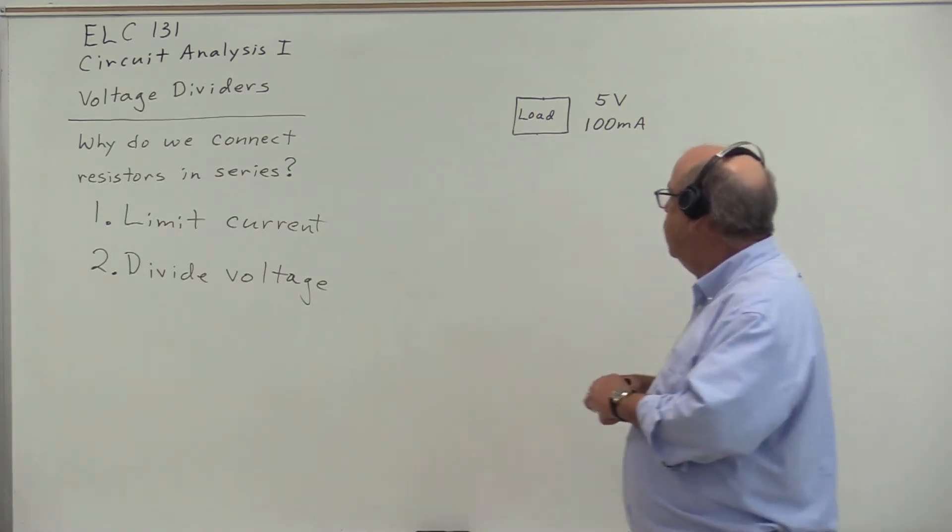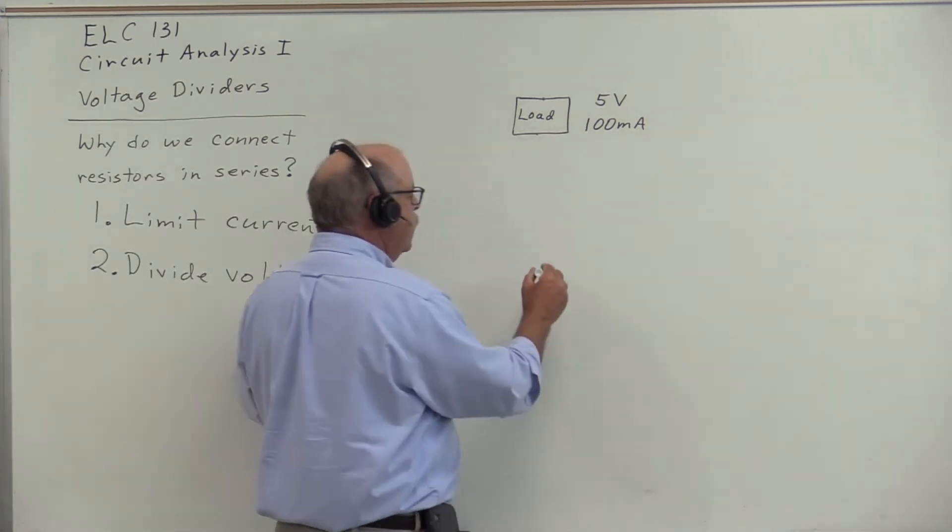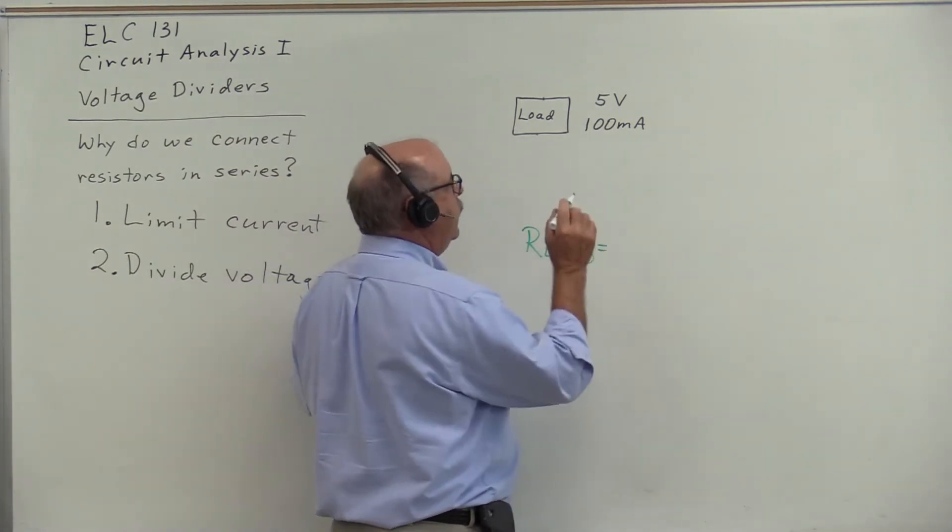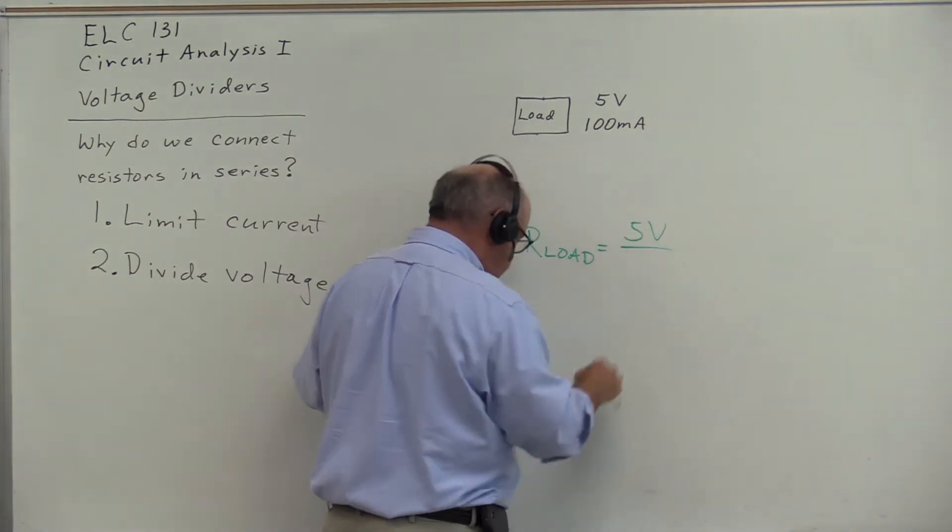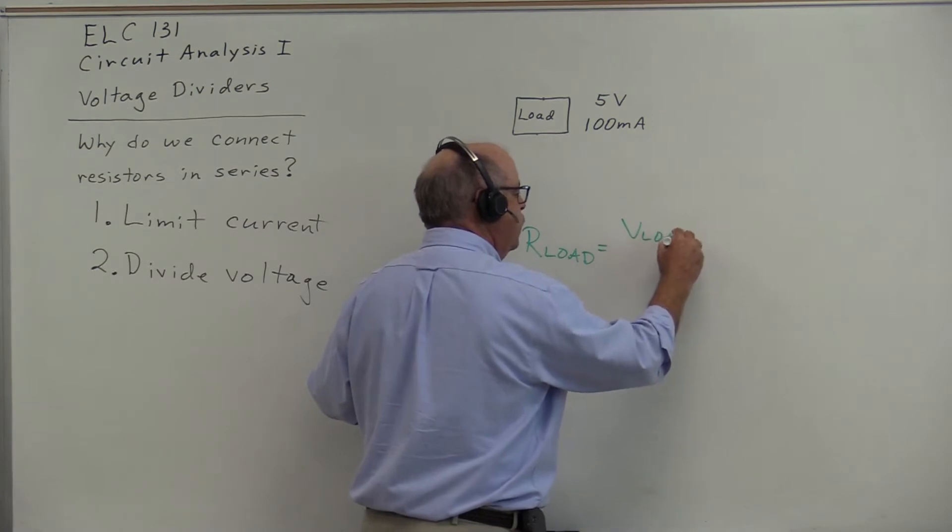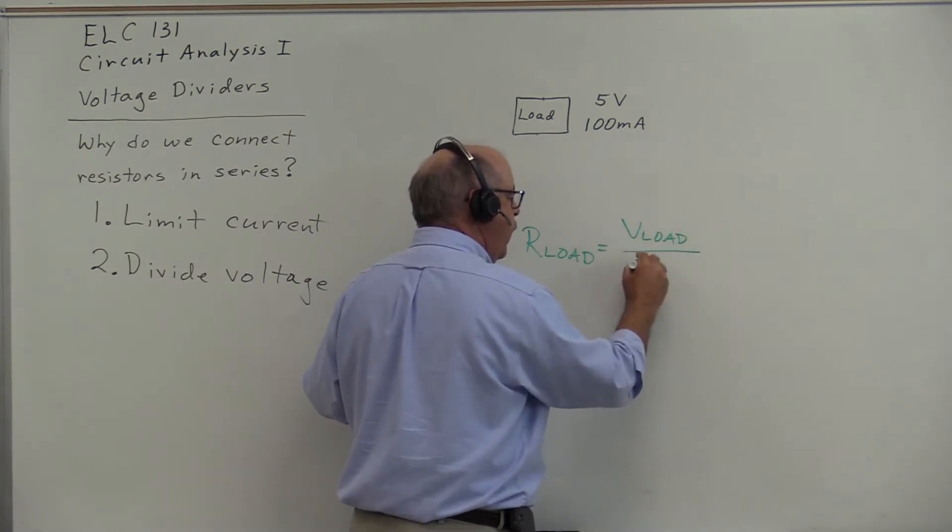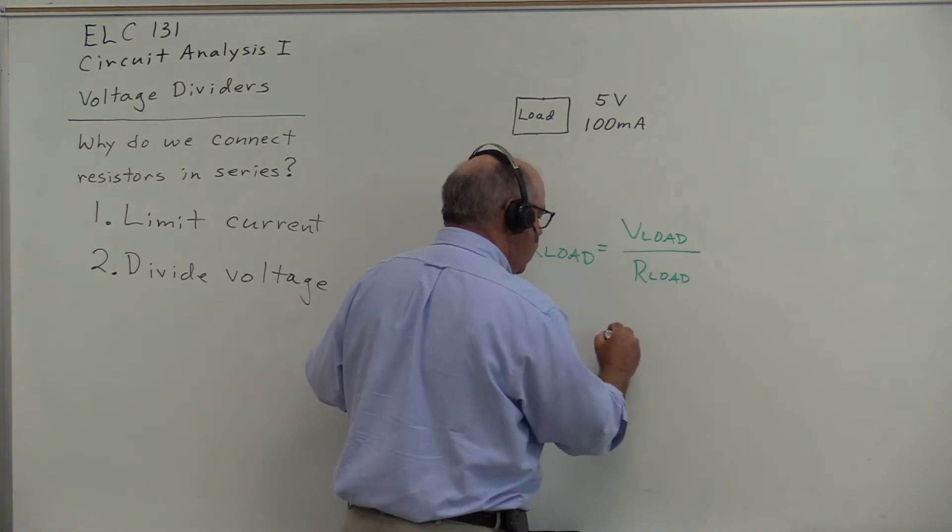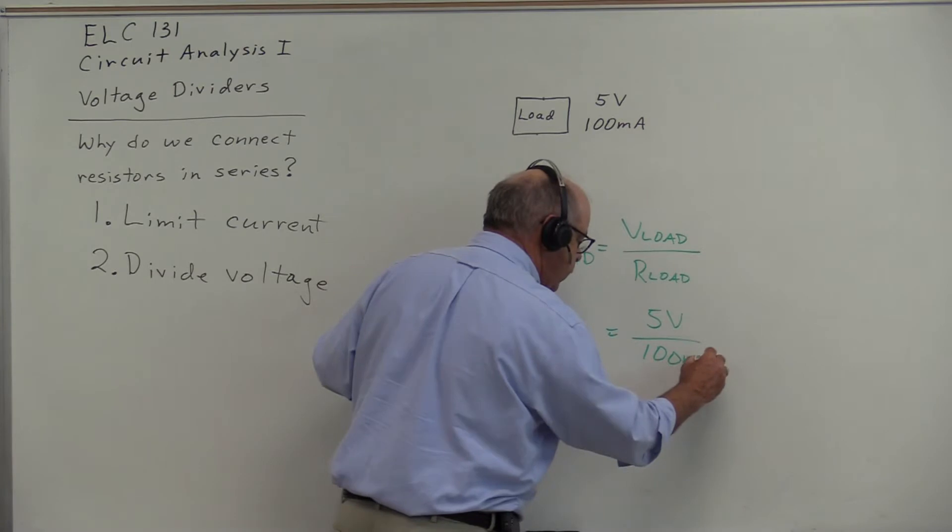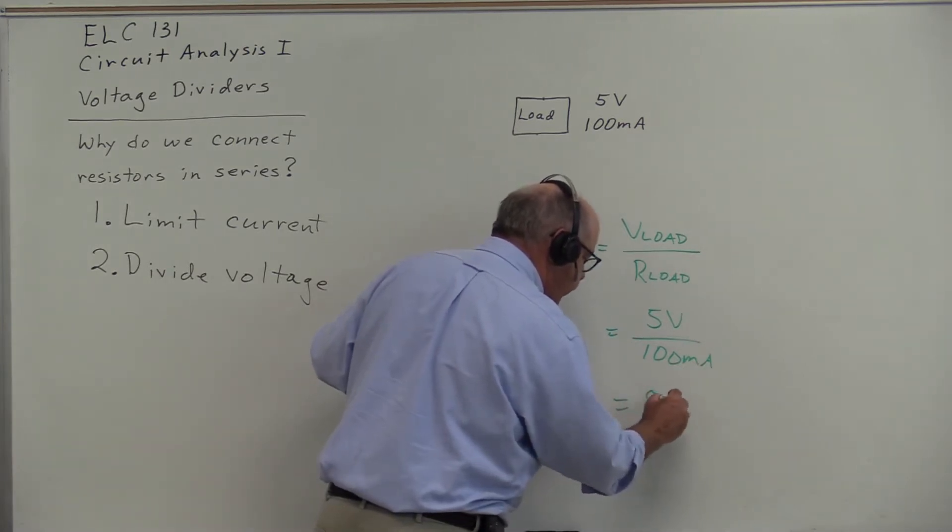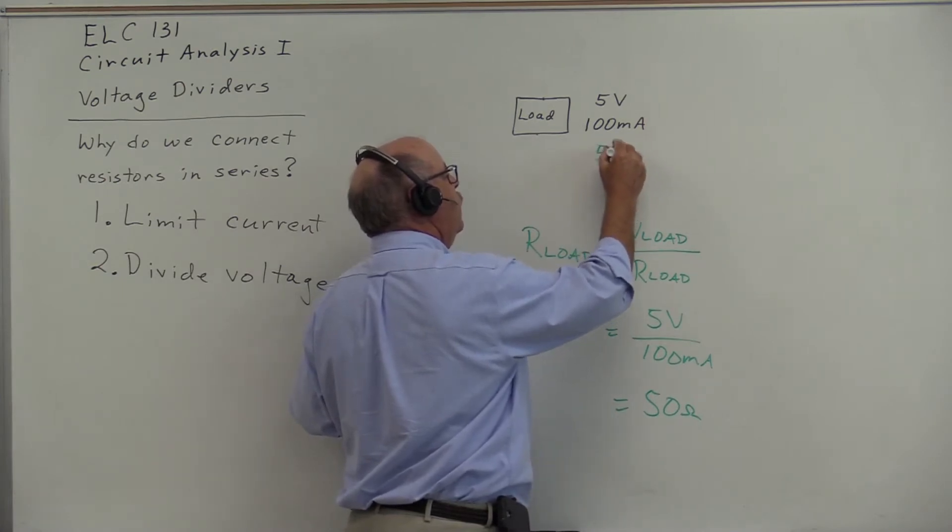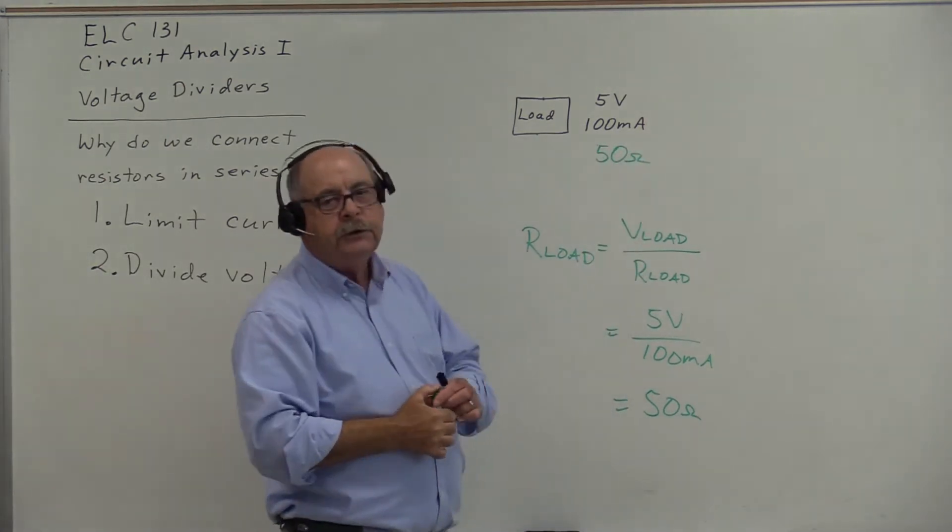When 5 volts are applied, it will draw 100 milliamps of current. We can say that this load has a resistance calculated by Ohm's Law: V_load divided by I_load, 5 volts divided by 100 milliamps is 50 ohms. So to us, this load represents a 50 ohm resistance.